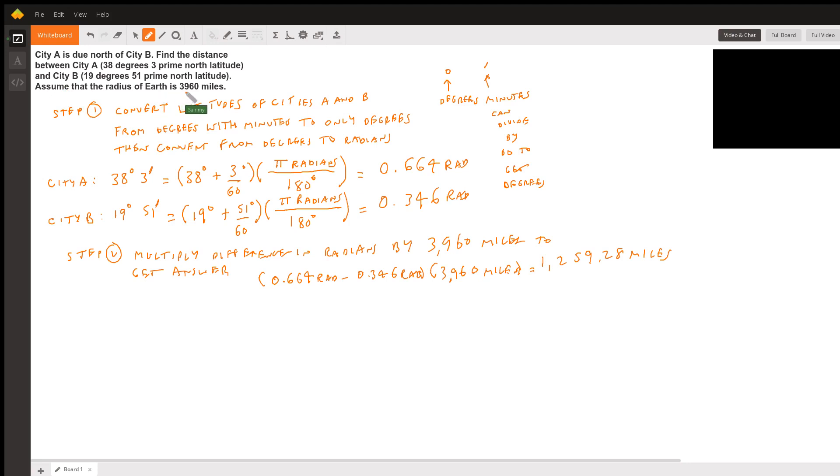This problem has two steps. Step one is to convert the latitudes of cities A and B from degrees with minutes to only degrees, then convert from degrees to radians. When you see this, you have 38 degrees and 3 minutes for City A, and 19 degrees and 51 minutes for City B.